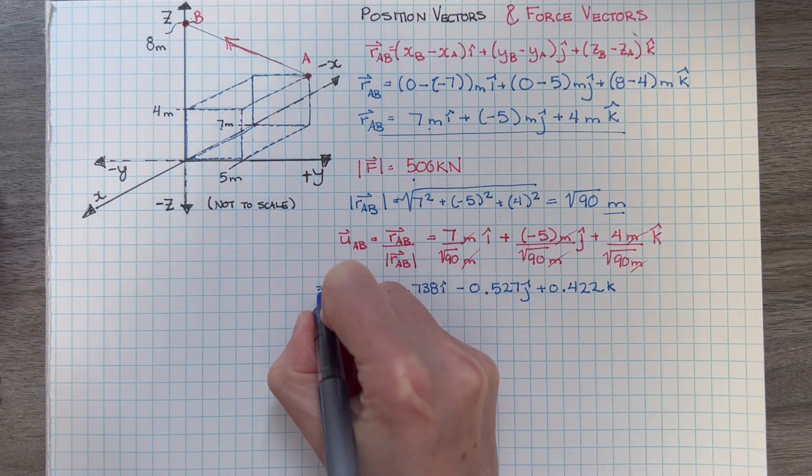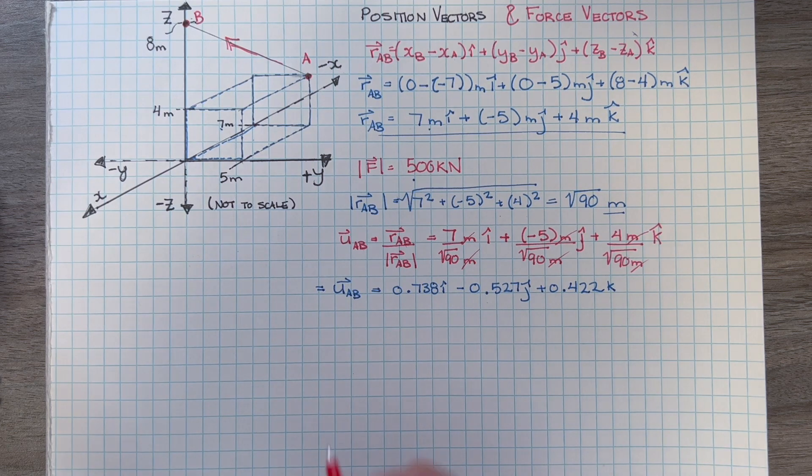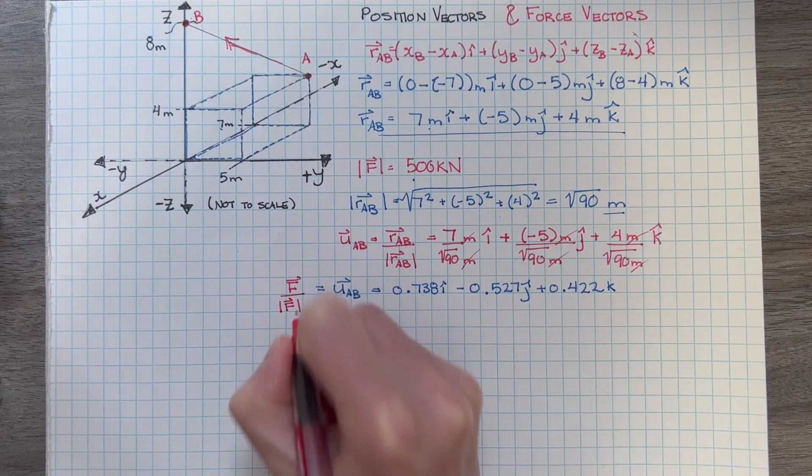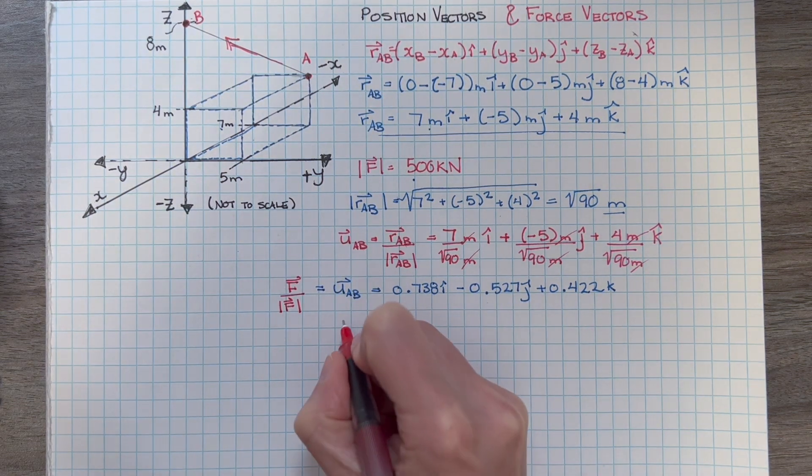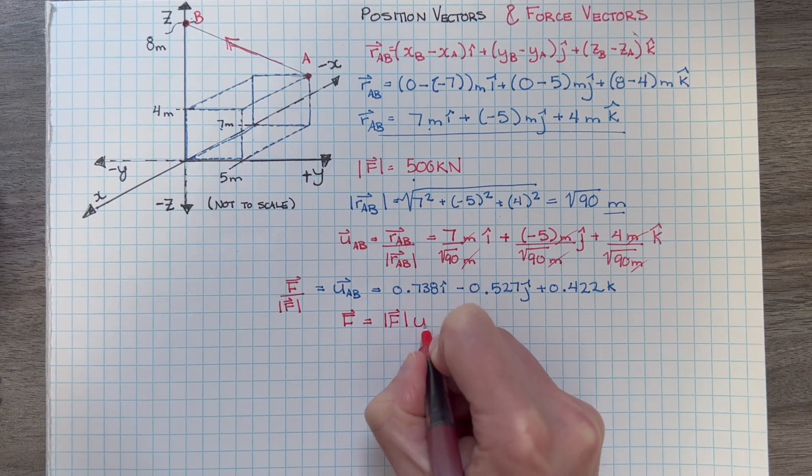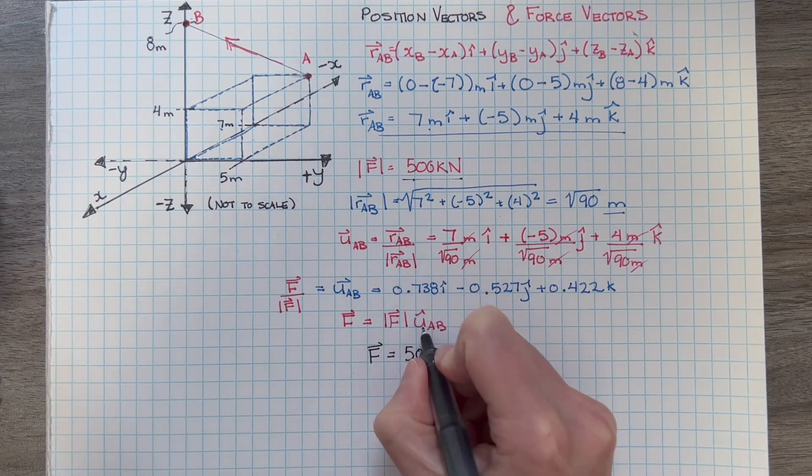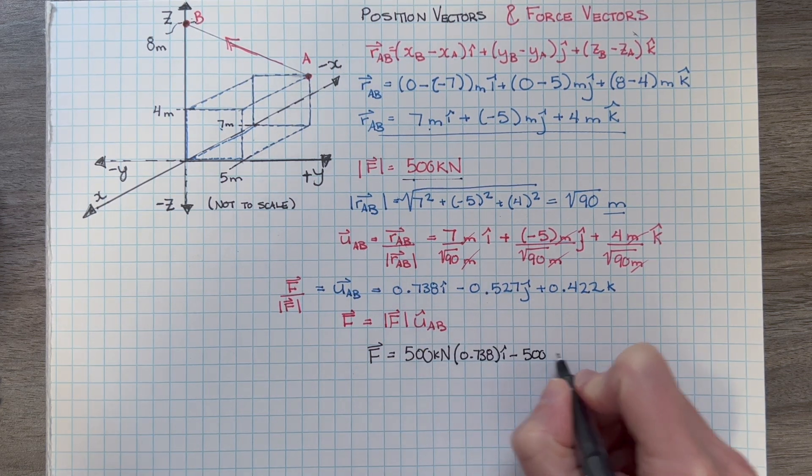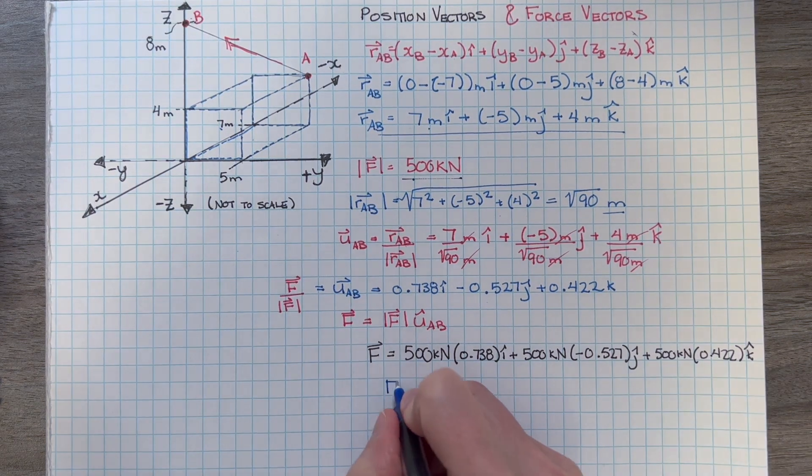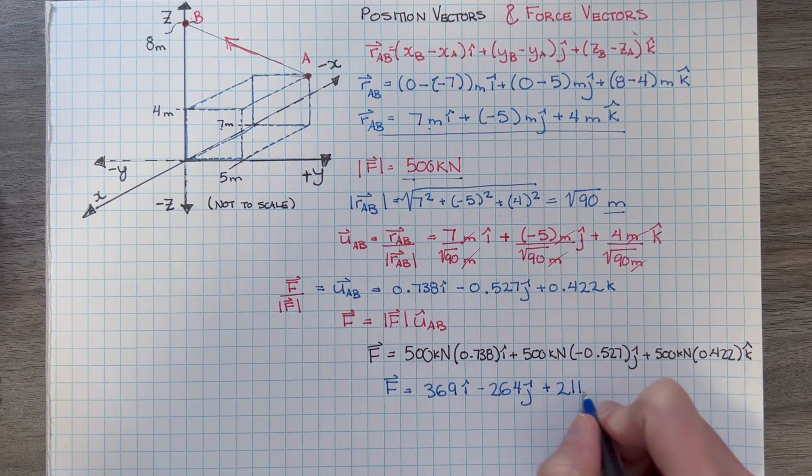Since our force and position vectors have the same unit vector, that means that this is also true, and can be rearranged as... Now, we can use our 500 kN force magnitude to expand this. We can use our unit vector circles. Et voila, this is our force vector acting in this direction.